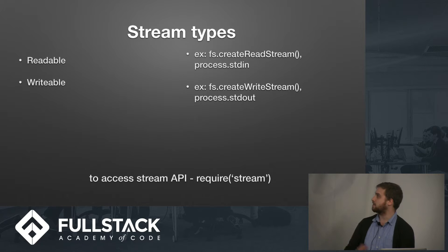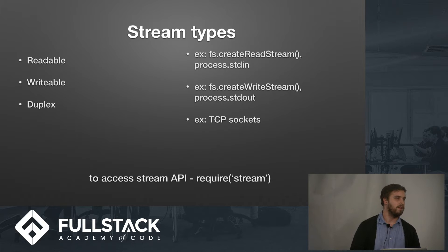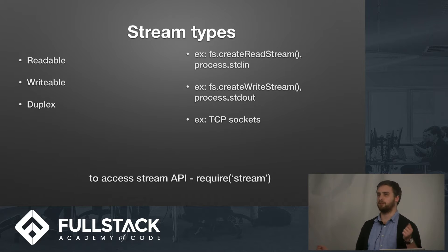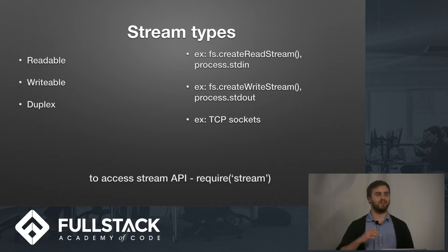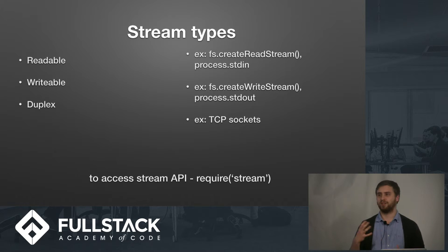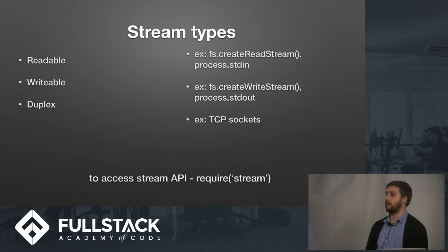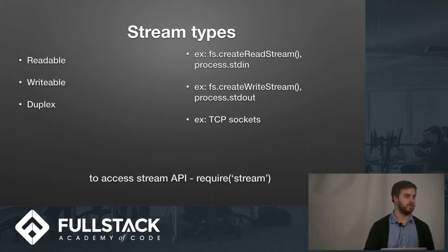We have writable streams. The analog to those are createWriteStream for saving a file to the file system, and then stdout for writing to the standard output. And then we've got duplex streams, which are essentially just a readable stream and a writable stream combined into one single object. Each one has its own buffer — it's really just two streams combined into one. There's no magic to a duplex stream. The example of that is a TCP socket, so a server can write to a client, a client can write to a server, and they can both read what's being written.